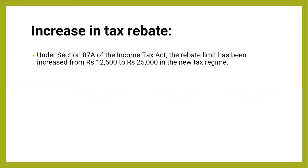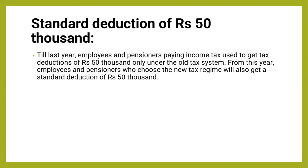After that, section 87A, which is the rebate section — its limit has increased in the new tax regime. Again you can see that every change makes the new tax regime more beneficial. In the last year the rebate amount was 12,500, which has now been increased to 25,000 — just double — in the new tax regime.